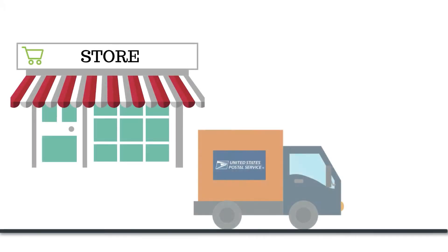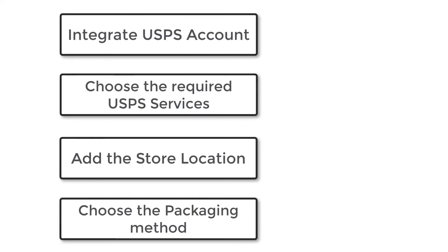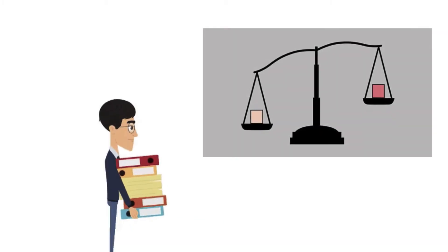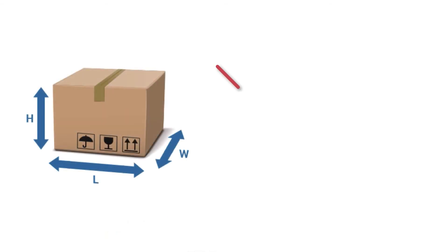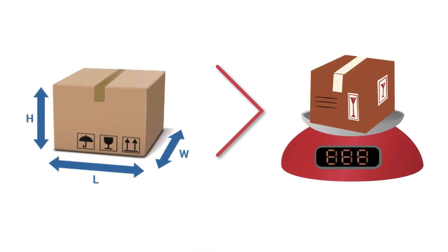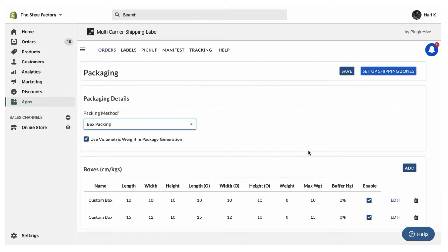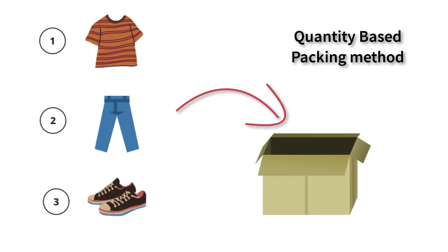Now you need to configure your store location — that'll be your ship-from address. The next step is to choose the packaging method. The easiest and most common method is to choose packaging based on product weight, but if the volumetric weight of your product is higher than the actual weight, choose the box packing method. You can also choose a quantity-based packing method.